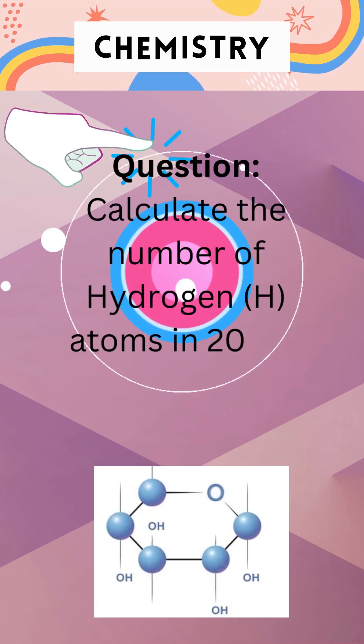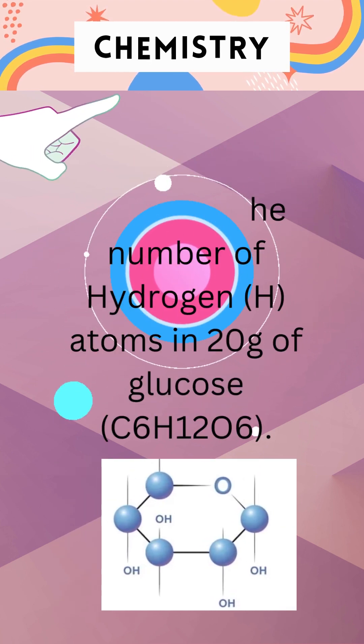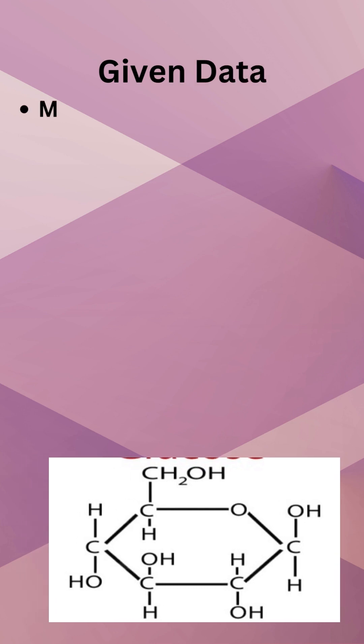Calculate the number of H atoms in 20 grams of glucose. Data: mass of glucose given equals 20 grams.